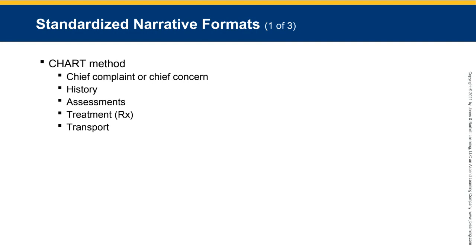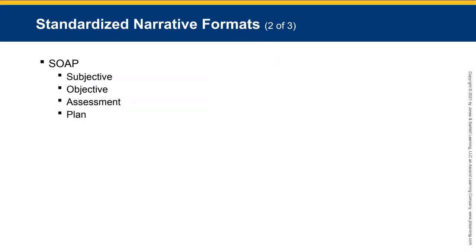The CHART method: C is chief complaint or chief concern; H/HX is history; A is assessment; RX or T is treatment and transport. The SOAP method: Subjective is what the patient tells you; Objective is based on your observation; Assessment is your assessment findings; Plan is what you do based on your assessment findings.